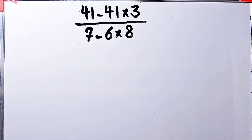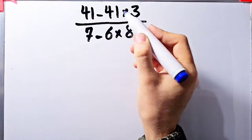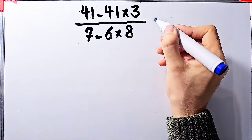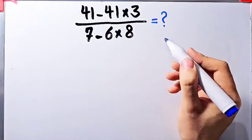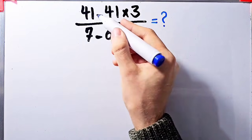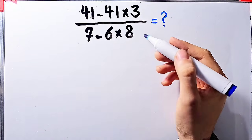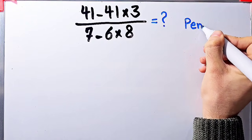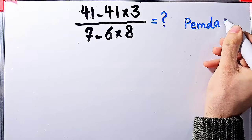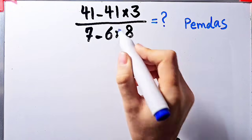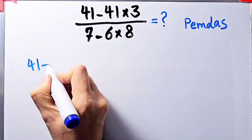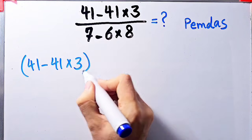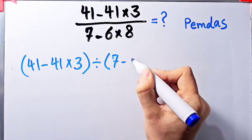If you're ready, let's solve another question. The third question is: 41 minus 41 times 3, then over 7 minus 6 times 8. What is the answer of this question? In this question, we have subtraction, multiplication, and division. Again, to solve this question, we need to follow the order of operations, which is PEMDAS. If you don't pay attention to this rule, you get the wrong answer. Let's simplify and solve this question step by step together.